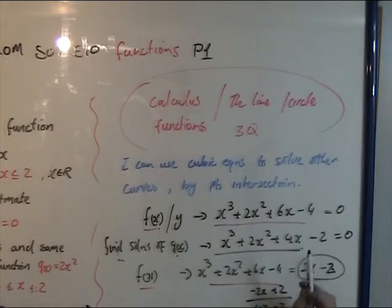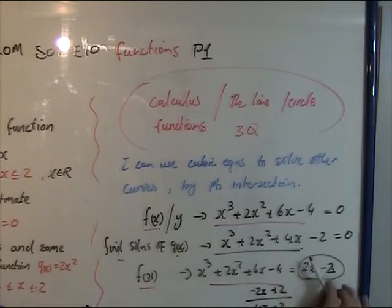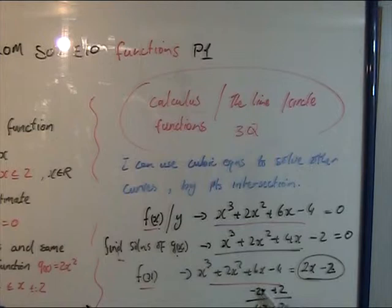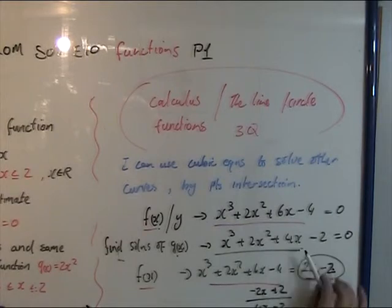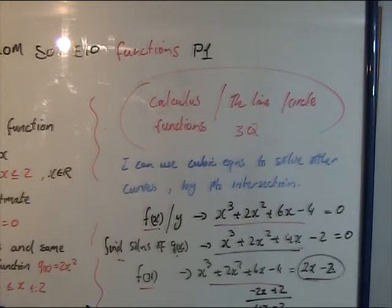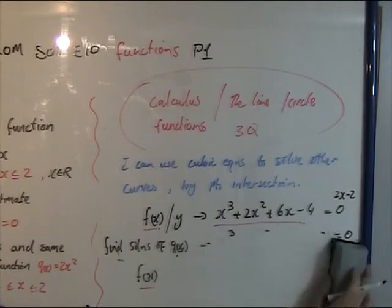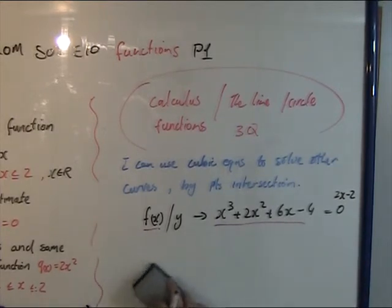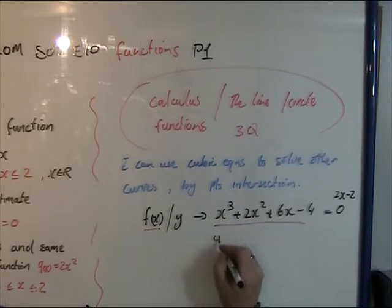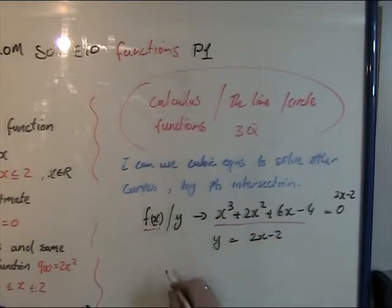So I'm looking at f of x. What do I need to do to f of x to make it look like 4x minus 2? Well, I need to take away 2x, and I need to take away 2, so I need to add 2. I get 4x minus 2, which is what I'm looking for. So the solution is 2x minus 2. You can say that y is equal to 2x minus 2, because f of x is that. And then you plot it.